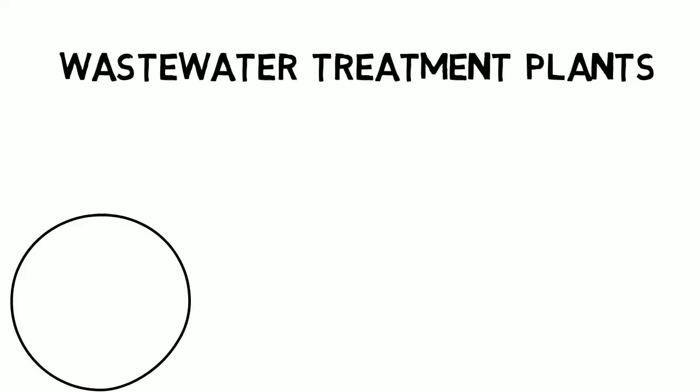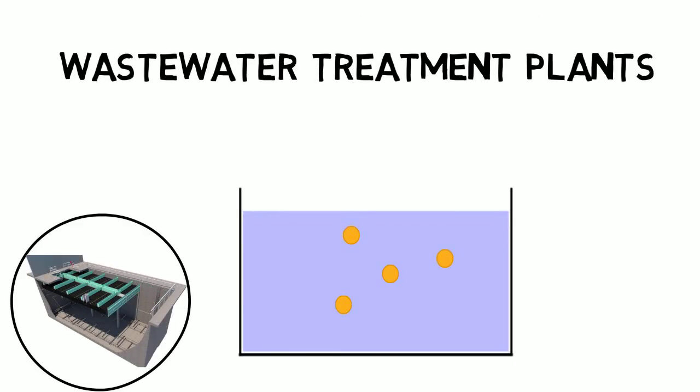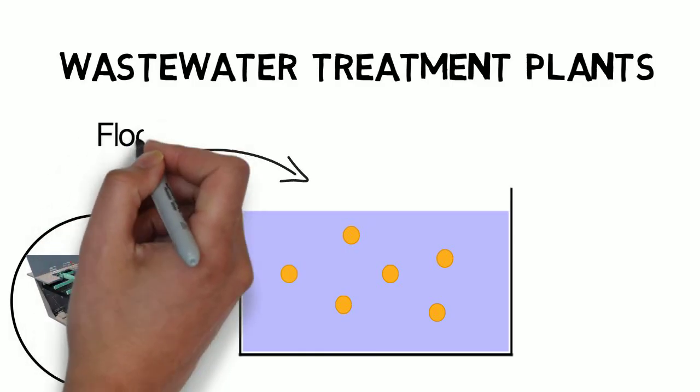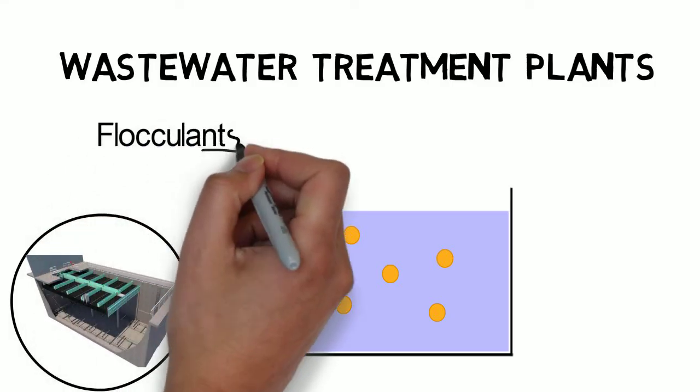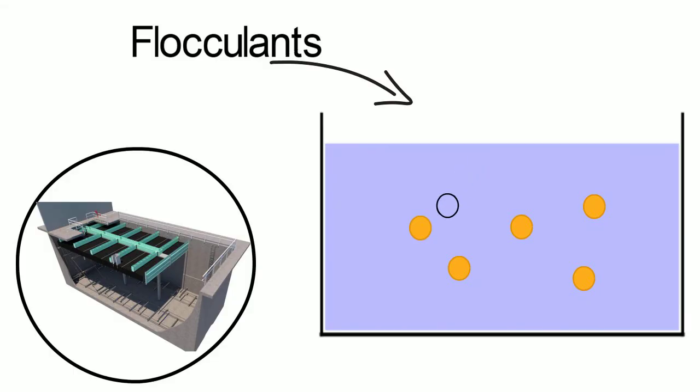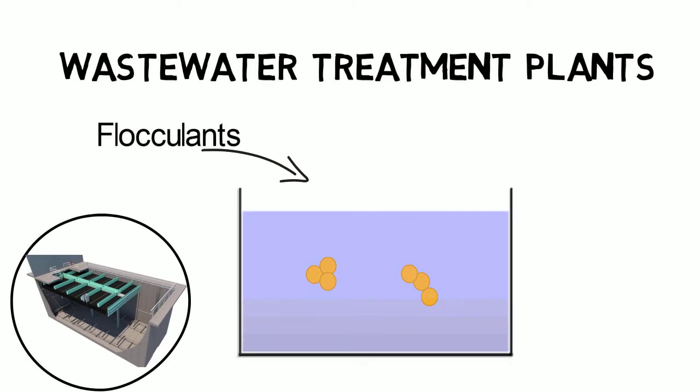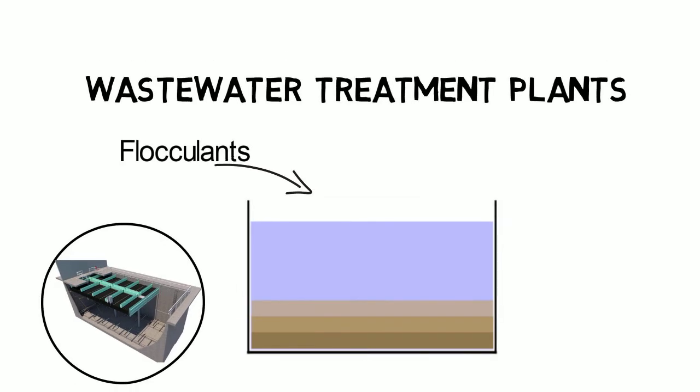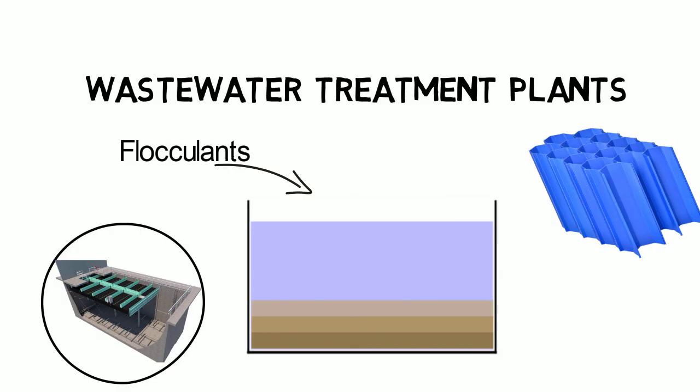In wastewater treatment plants, flocculants and coagulants are dosed to water with high turbidity. They alter electrical charges of particles so that they clump together and form bigger particles. The bigger particles are then settled down in sedimentation basins, which are often equipped with lamellar clarifiers for enhanced particle settling.